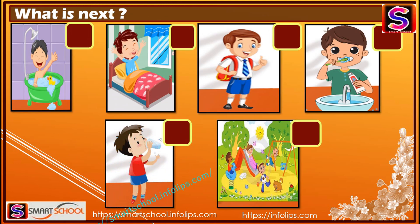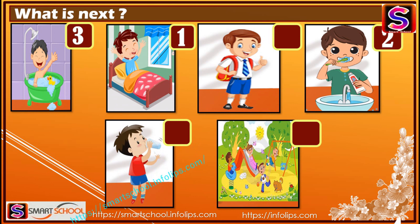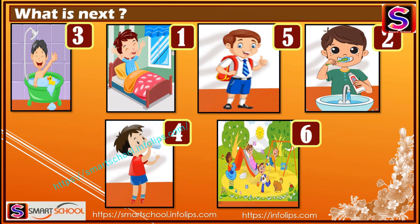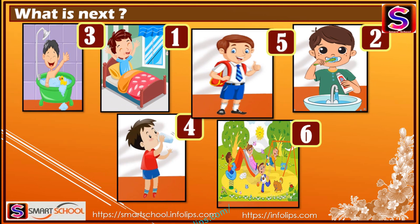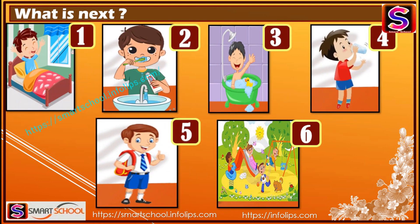First we're gonna wake up in the morning, then brush our teeth, then take a bath, drink milk, get ready for school, and play with friends in the evening. So the actual sequence is gonna be like this: one, two, three, four, five, and six.